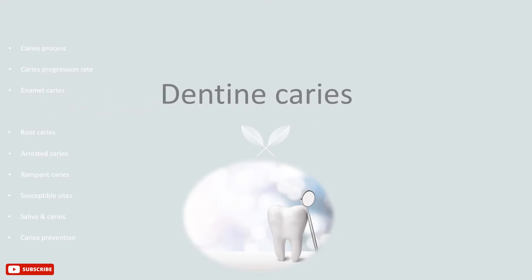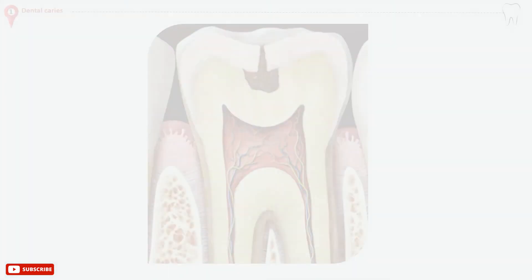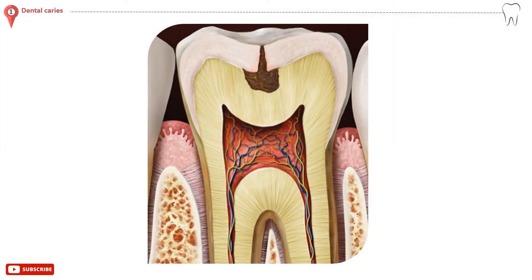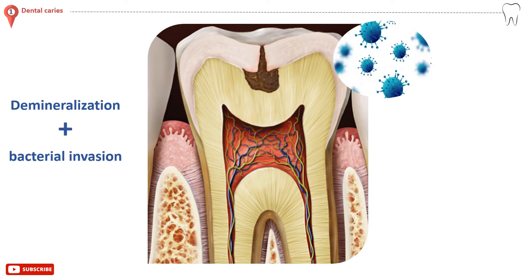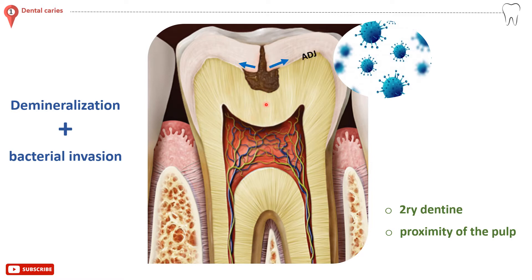Fissure caries. Dentine caries comprises demineralization followed by bacterial invasion, but it differs from enamel caries in two points: the first is the production of secondary dentine throughout the process, and the proximity of the lesion to the pulp. Once bacteria reach the amelodentinal junction, lateral spread occurs, undermining the overlying enamel.